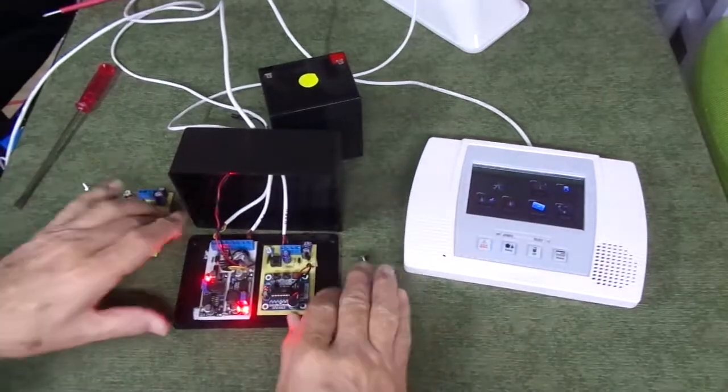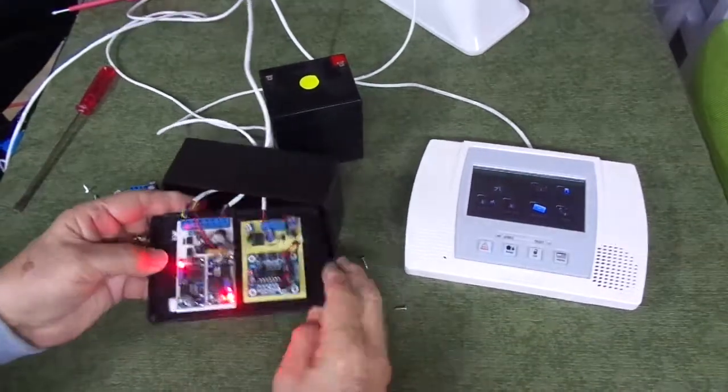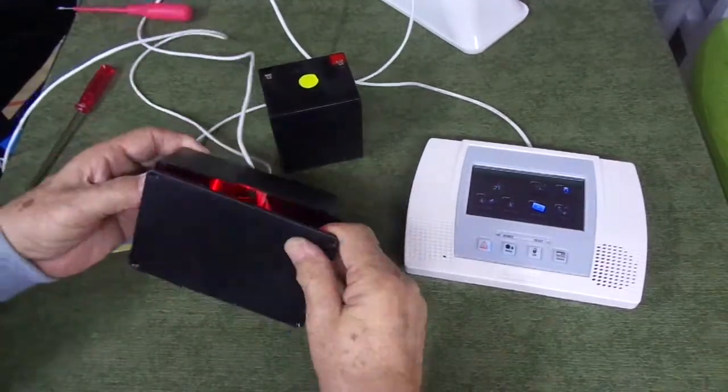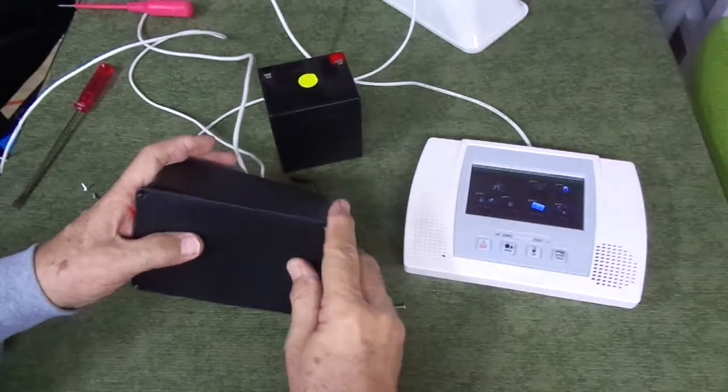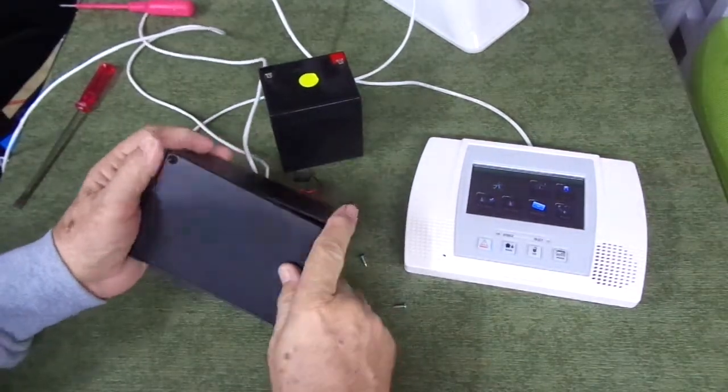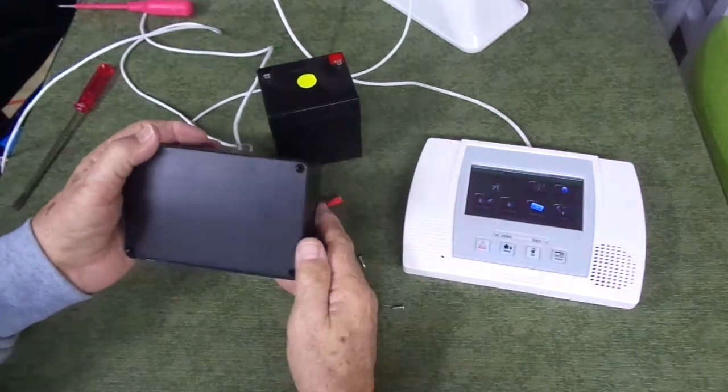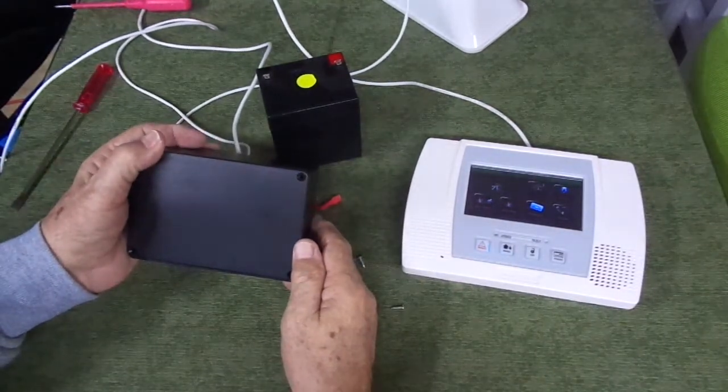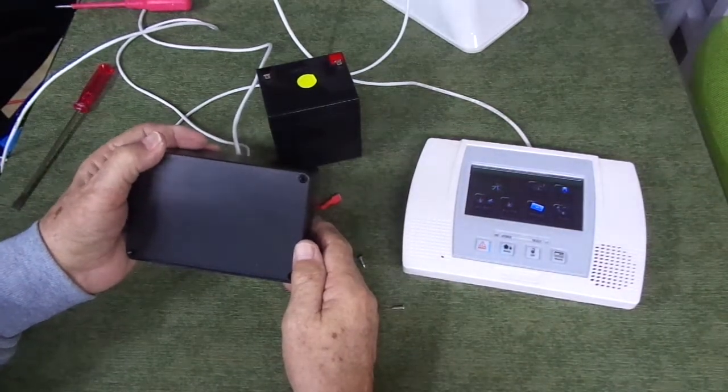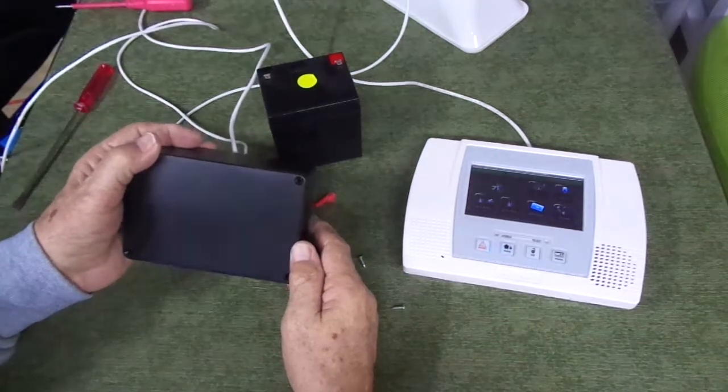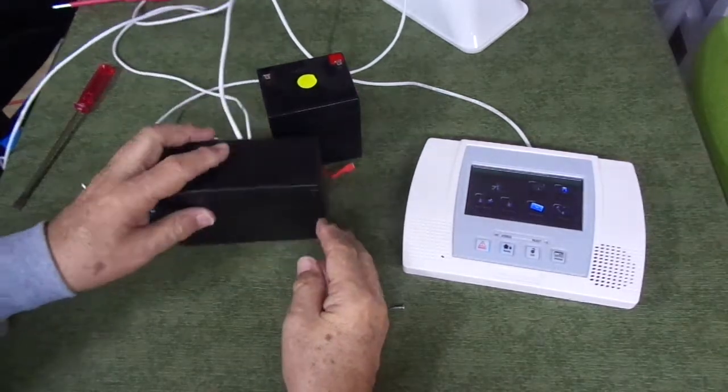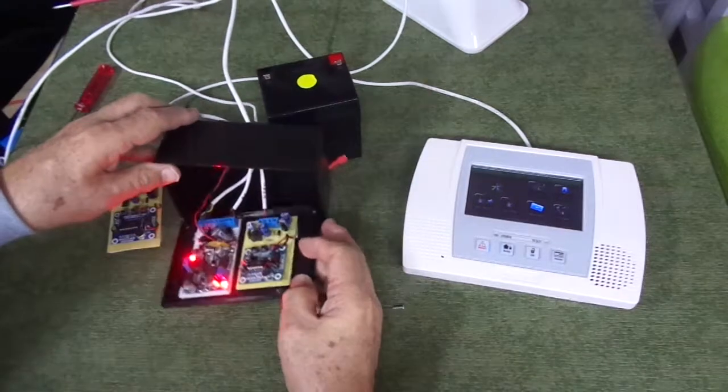Nice easy little package. This can go in the attic, it can go in a closet, it can go under a shelf in a counter. Actually, I've hidden them like in cabinets underneath the kitchen sink, anything that works for you that is very difficult for the burglars to find but is also convenient for you to pull the wire to.